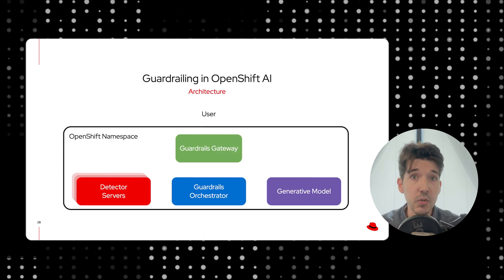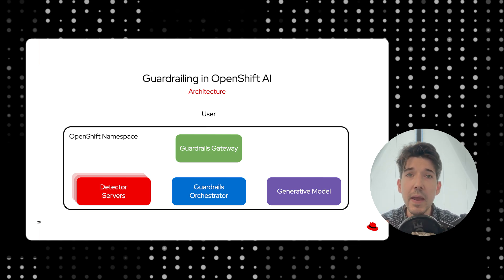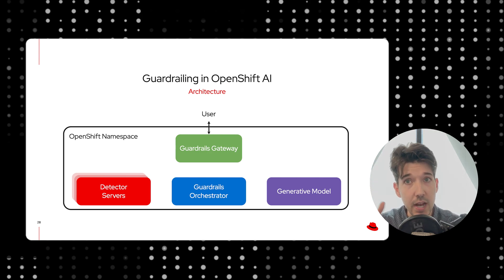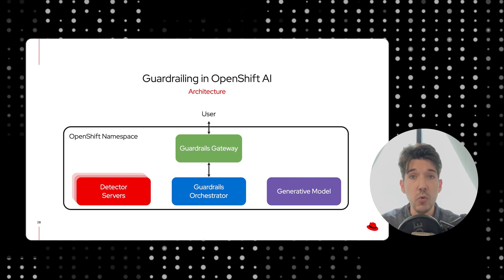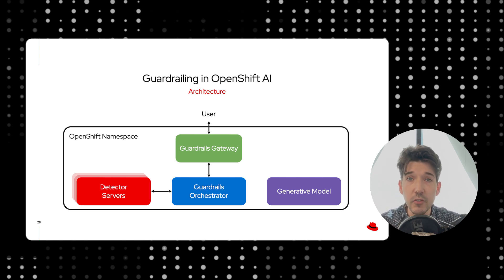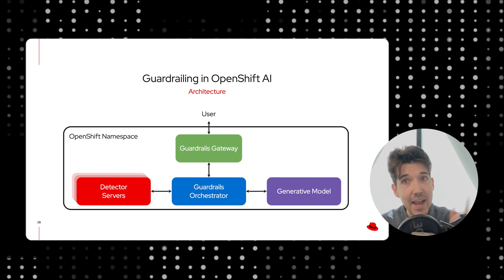The architecture of all of these inside OpenShift AI looks something like this, where the main entry point is through the guardrails gateway, where users come in through the chat completions endpoint. The guardrails gateway translates those requests into the orchestrator, and the orchestrator sends them to the detector servers and the generative model as required. It then sends results back to the guardrails gateway, which sends it back to the user. Now that we understand the components involved, let's take a look at a real-life OpenShift AI deployment of guardrails.